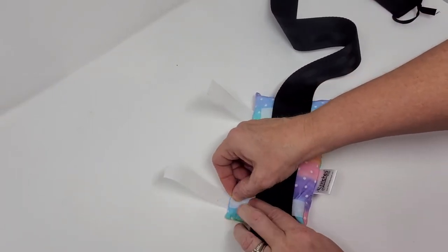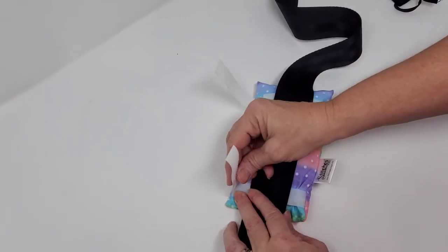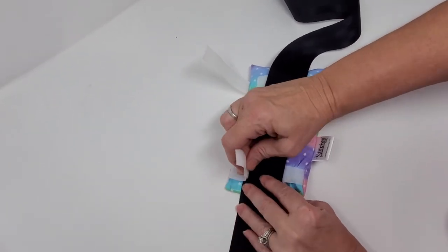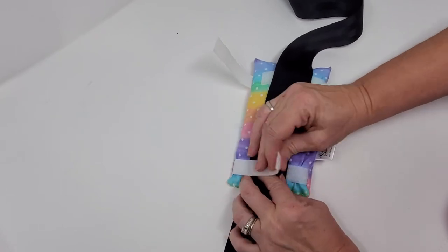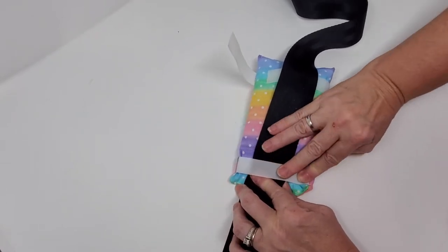And I'm going to pull it kind of over close to the other edge. Now, I'm going to Velcro that one there, and then I'm going to reach across and Velcro it to the other edge.